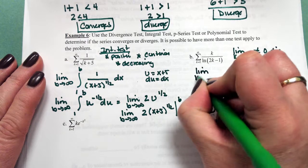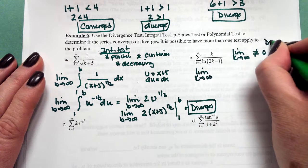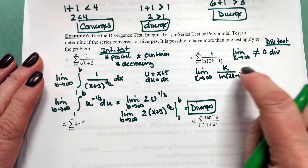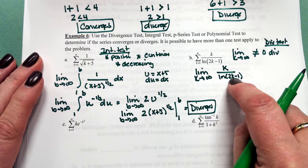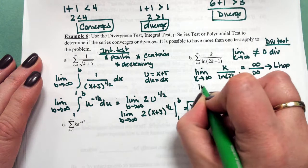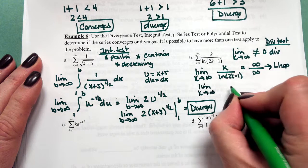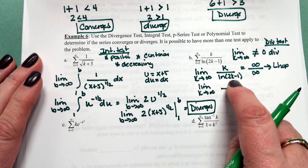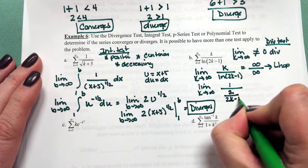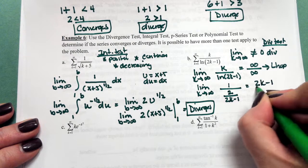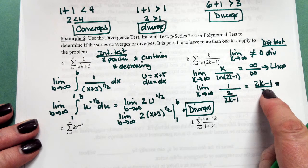For the series k/(ln(2k)−1) from k=1 to infinity, I'll use the divergence test. The limit as k→∞ of k/(ln(2k)−1) gives ∞/∞, so I apply L'Hôpital's rule. The derivative of k is 1; the derivative of ln(2k)−1 using the chain rule is 1/(2k)·2 = 2/(2k−1). So the limit becomes (2k−1)/2, which goes to infinity as k→∞. Since the limit does not equal 0, this series diverges.